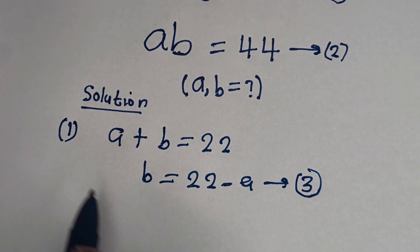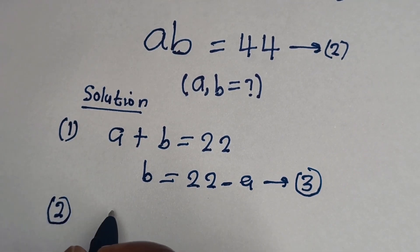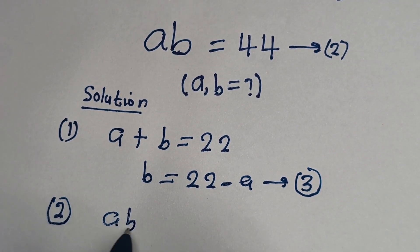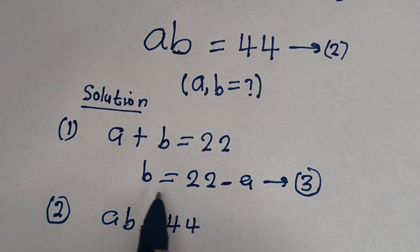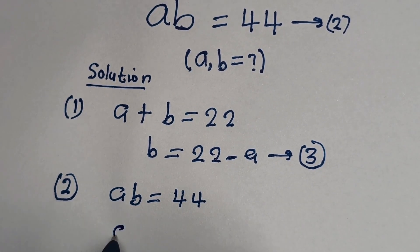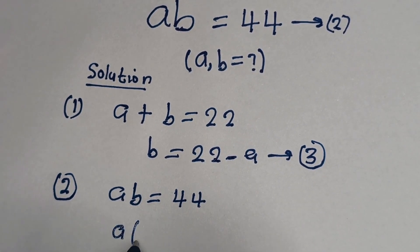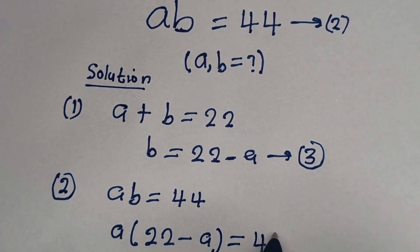Then from equation 2, AB is equal to 44. Now let us substitute for B, which is 22 minus A. So A times bracket 22 minus A is equal to 44.